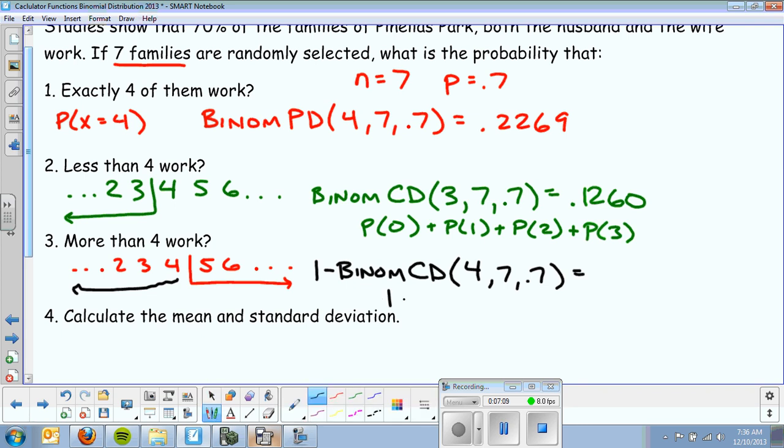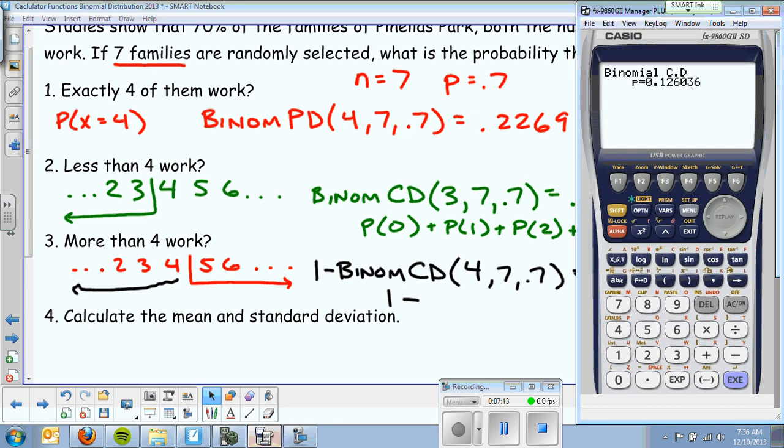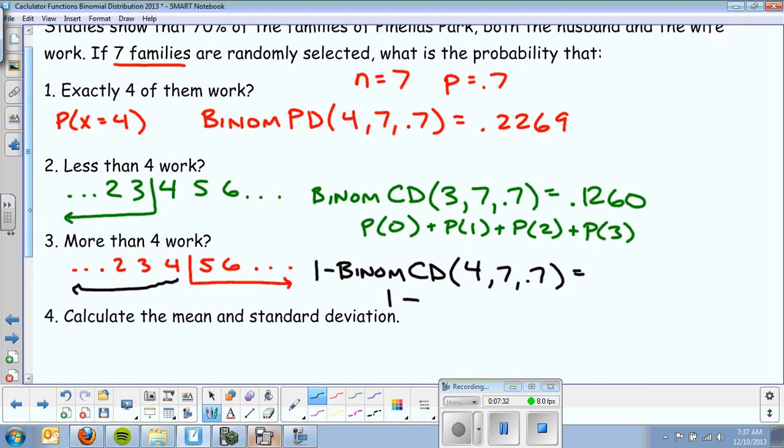Now to type that in the calculator, I'm going to separately calculate that binomial CD. And on this is nice, I can just hit exit. And I can go back and change this to 4 or less. I can hit calculate. I can write that number down, 0.3529.